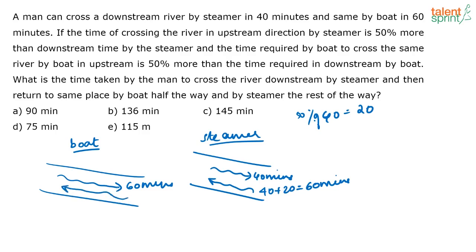Similarly, looking at the boat: the time required by the boat upstream is 50% more than the time required downstream by the boat. What is 50% of 60? Half of 60 is 30. So the time taken by the boat to go upstream is 60 plus 30, which is 90 minutes.